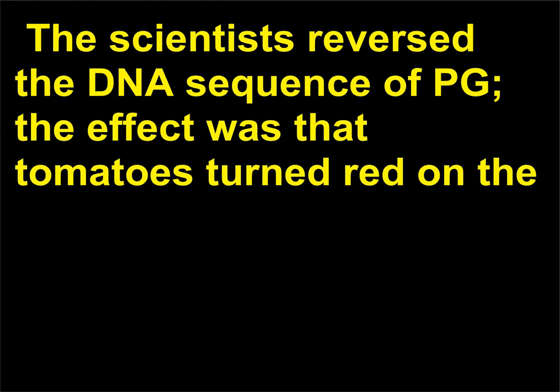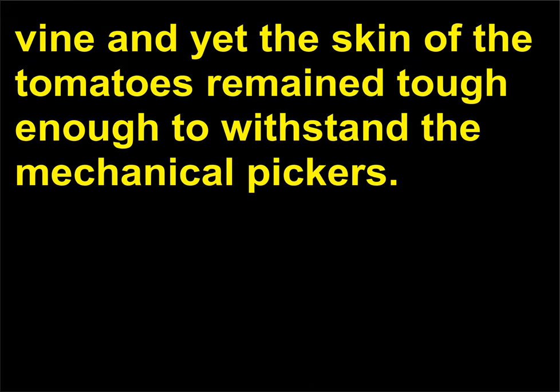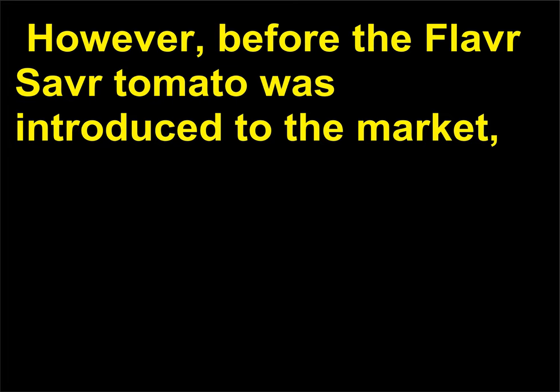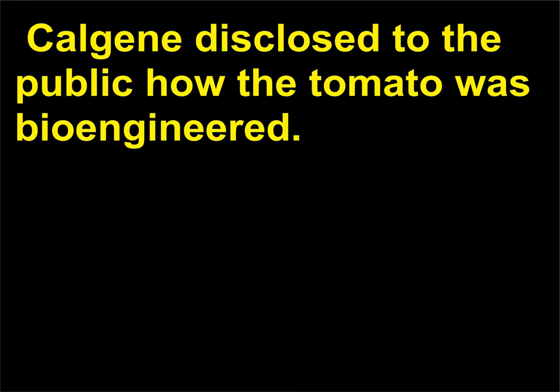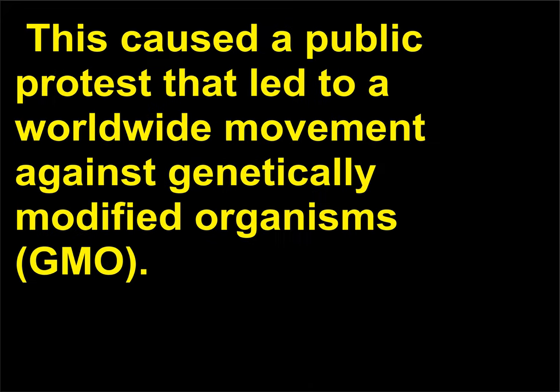The scientists reversed the DNA sequence of PG; the effect was that tomatoes turned red on the vine, and yet the skin of the tomatoes remained tough enough to withstand the mechanical pickers. However, before the Flavr Savr tomato was introduced to the market, Calgene disclosed to the public how the tomato was bioengineered. This caused a public protest that led to a worldwide movement against genetically modified organisms (GMO).